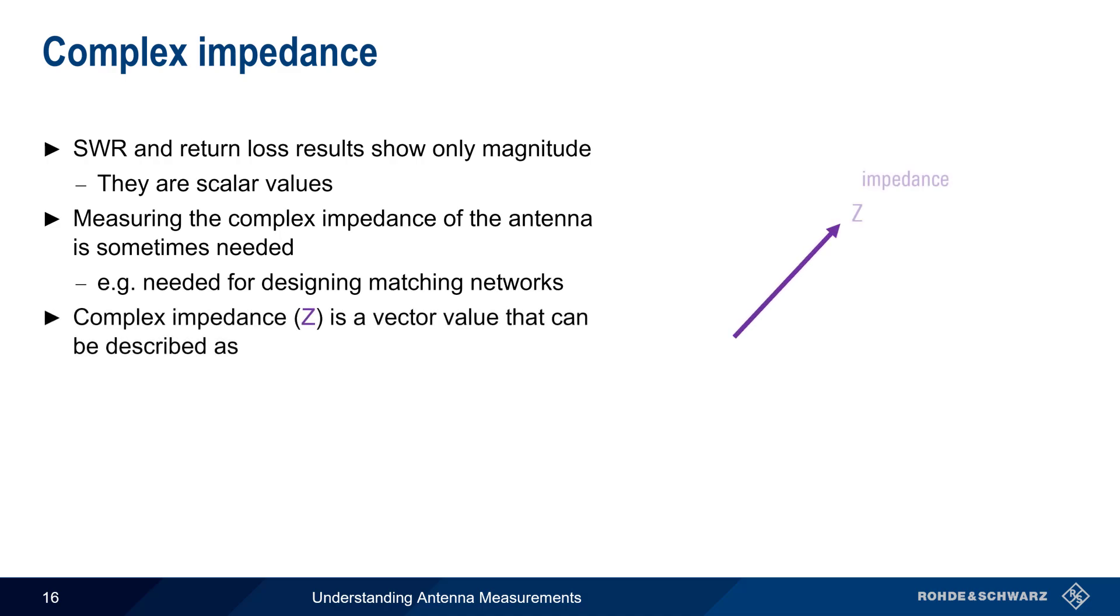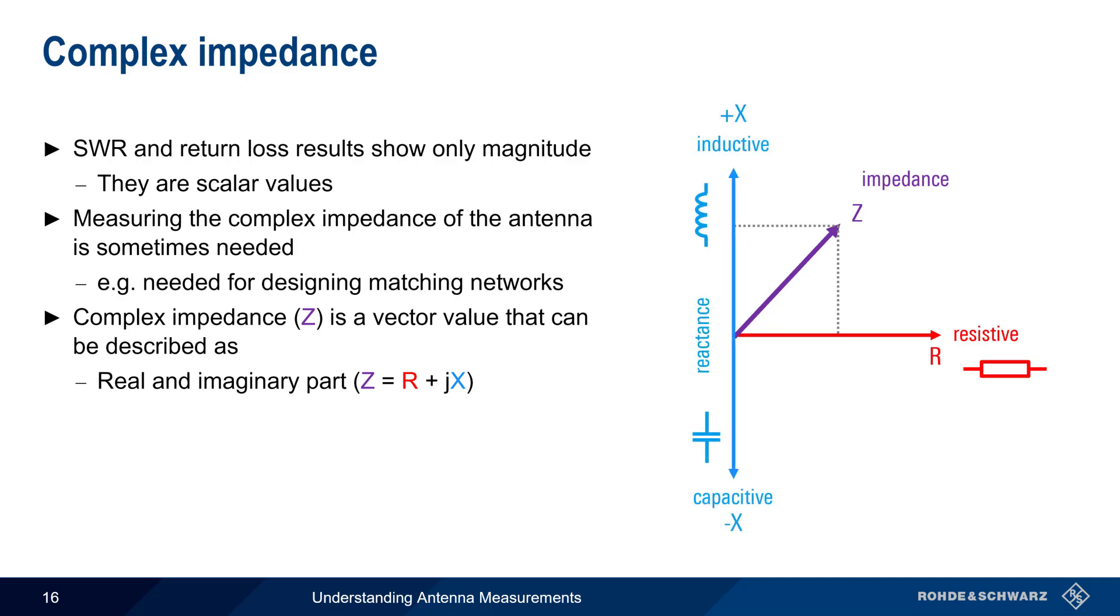Recall that complex impedance, Z, is a vector value, which can be described in two ways. One way is as a combination of a resistive and real part, and a reactive or imaginary part. The other way is as a magnitude and phase angle. Simple formulas can be used to convert between these two formats.